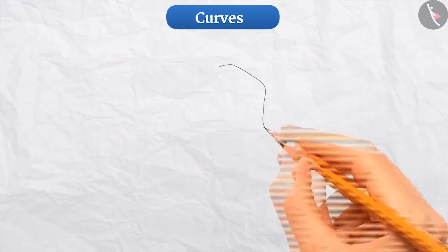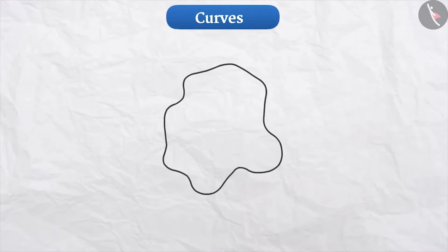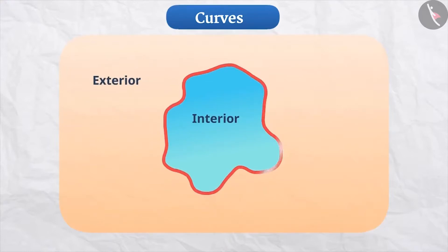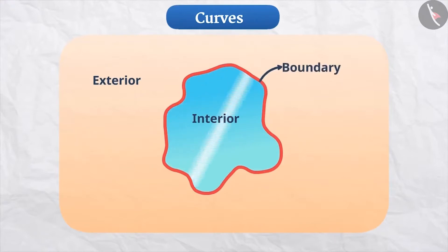When we talk about a closed curve, we say it has three parts: the part inside the curve, the part of the curve itself, and the part outside the curve. The part inside the curve is called its interior, the part outside the curve is called its exterior, and the part of the curve itself is called its boundary. The interior and boundary of a curve together form its region.